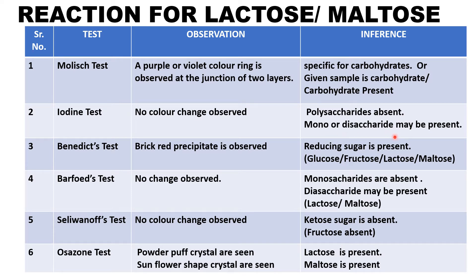Iodine test: it is a disaccharide so no change is observed. We can mention polysaccharide is absent; mono or disaccharide could be present. To differentiate between mono and disaccharide, we perform Benedict's test, which would give a brick-red precipitate, suggesting the sample is a reducing sugar — it could be fructose, lactose, maltose, or sucrose.